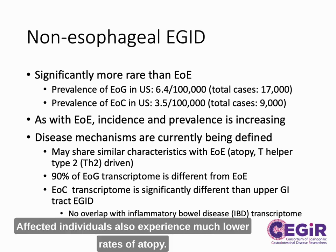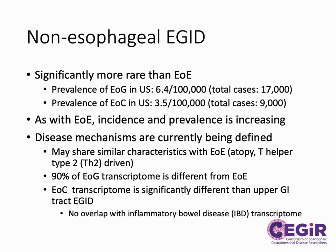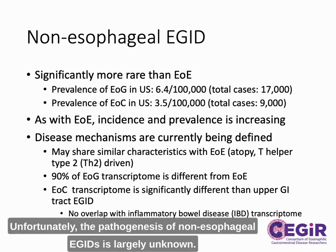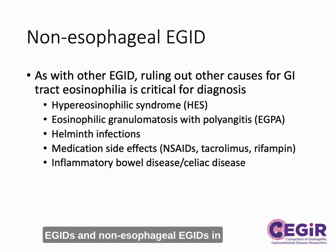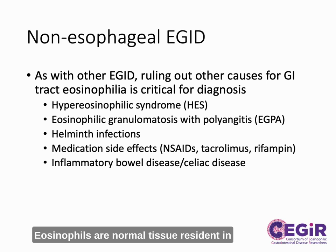Affected individuals also experience much lower rates of atopy. Unfortunately, the pathogenesis of non-esophageal eGIDS is largely unknown. eGIDS, and non-esophageal eGIDS in particular, are diagnoses of exclusion. Eosinophils are normal tissue residents in the stomach, small intestine, and colon.